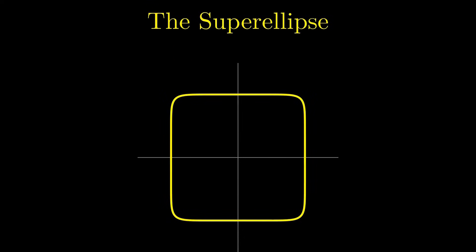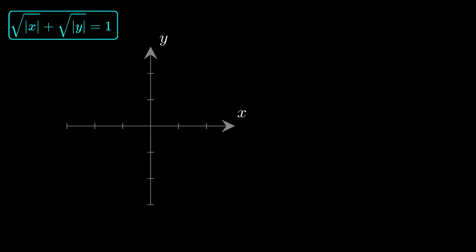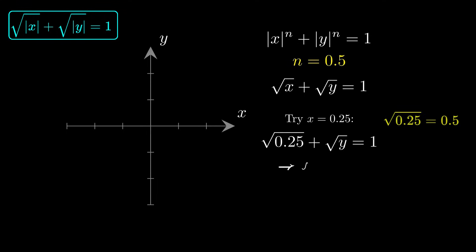Let's plot them together. Let's begin with a small exponent, n equals 0.5. In the first quadrant, the equation becomes the square root of x plus the square root of y equals 1. Try plugging in x equals 0.25. The square root of 0.25 is 0.5, so the square root of y must also be 0.5. That means y equals 0.25.